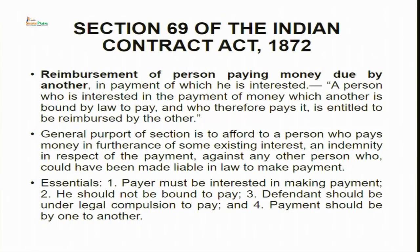Moving on to the second provision — section 69 of the Indian Contract Act 1872. Section 69 deals with reimbursement of a person paying money due by another. Therein, the term reimbursement has been mentioned like in section 68, but here we are talking about reimbursement of a person who has paid money which someone else was legally bound to pay, but because this person's interest was also involved, he paid that money instead of the person who was legally bound to do that.